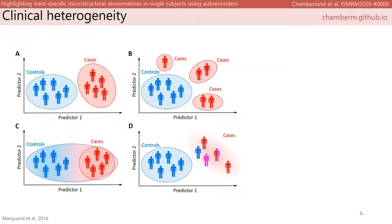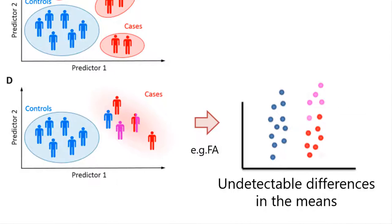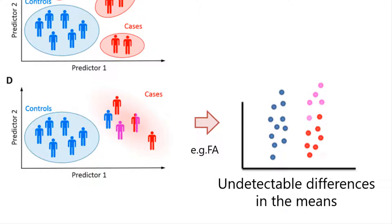Let's take a look at the last scenario here. Imagine comparing FA between healthy controls and a population with varying levels of FA — some go up, some go down with disease. The overall effect might result in no difference between the two groups, due to heterogeneity within the patient group.